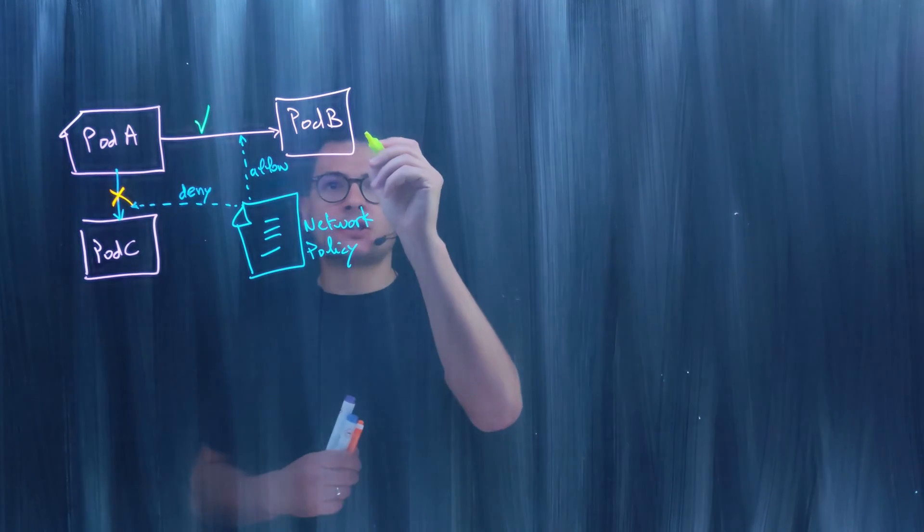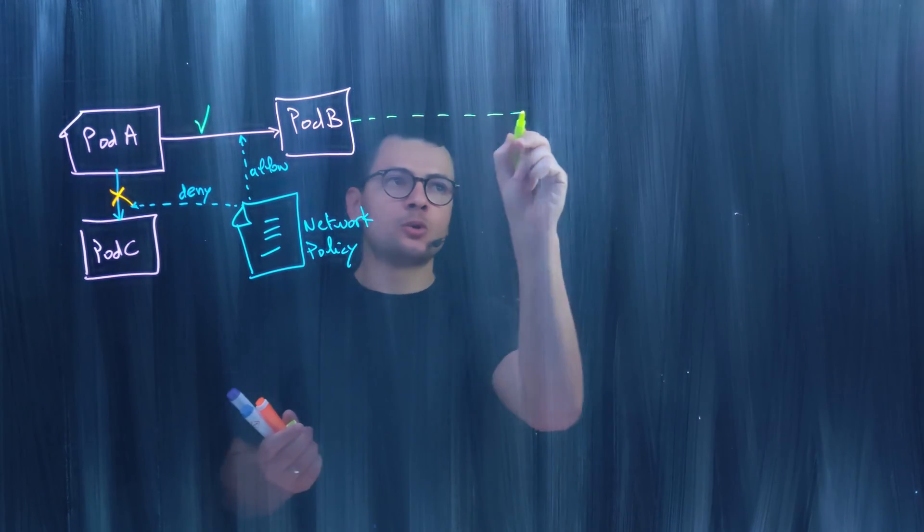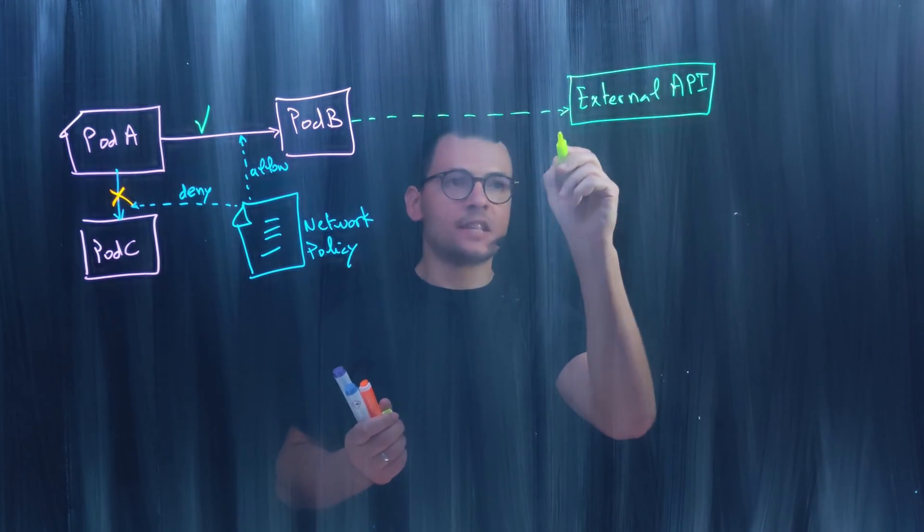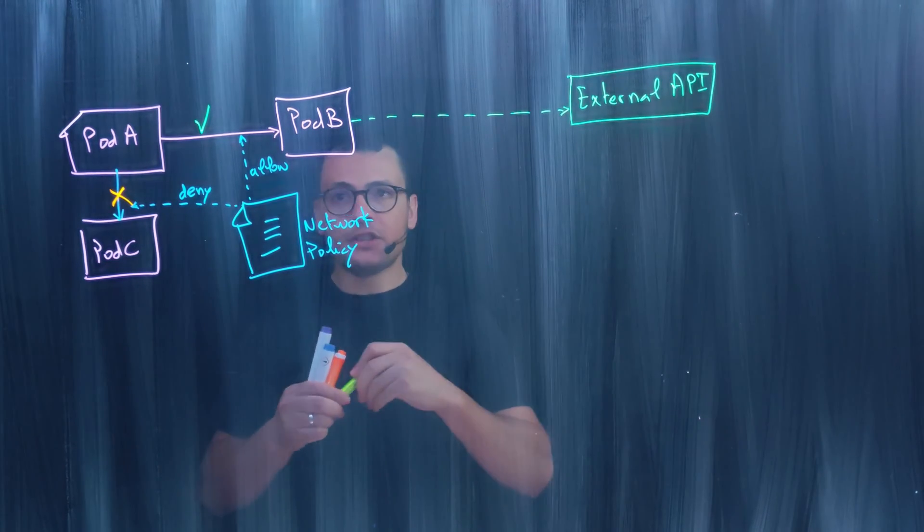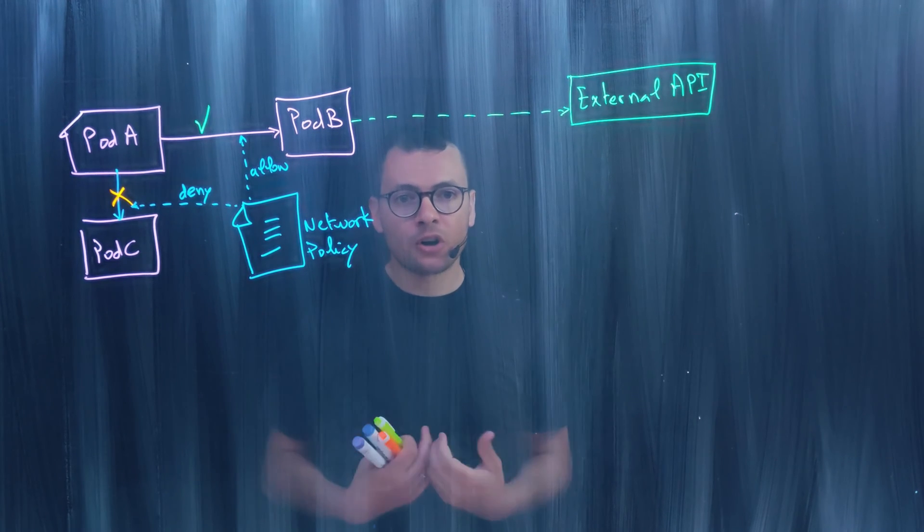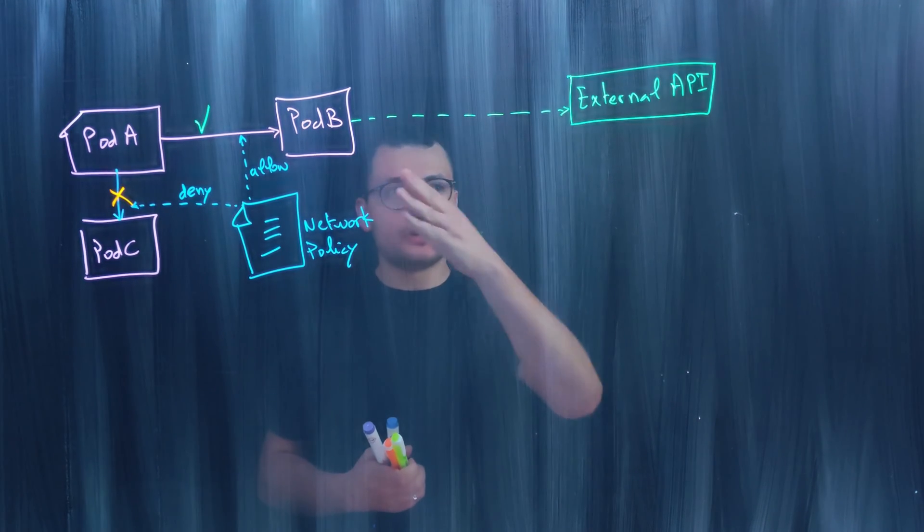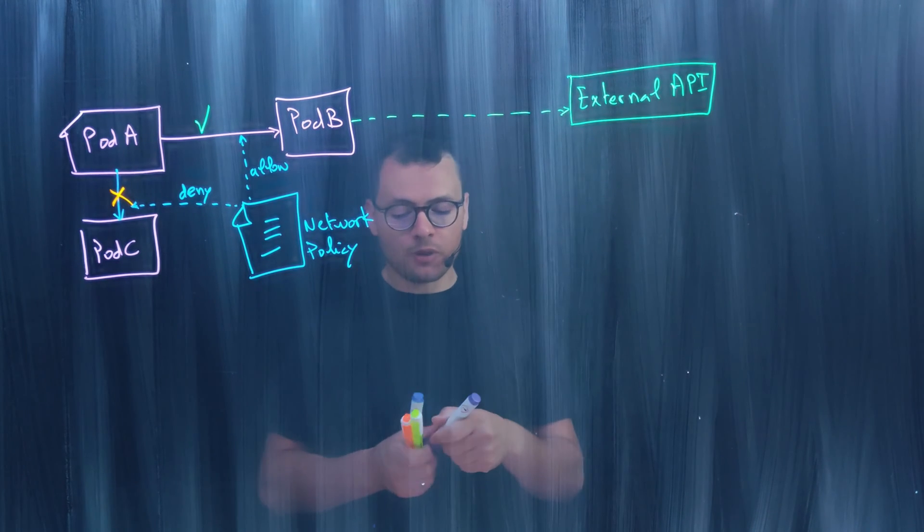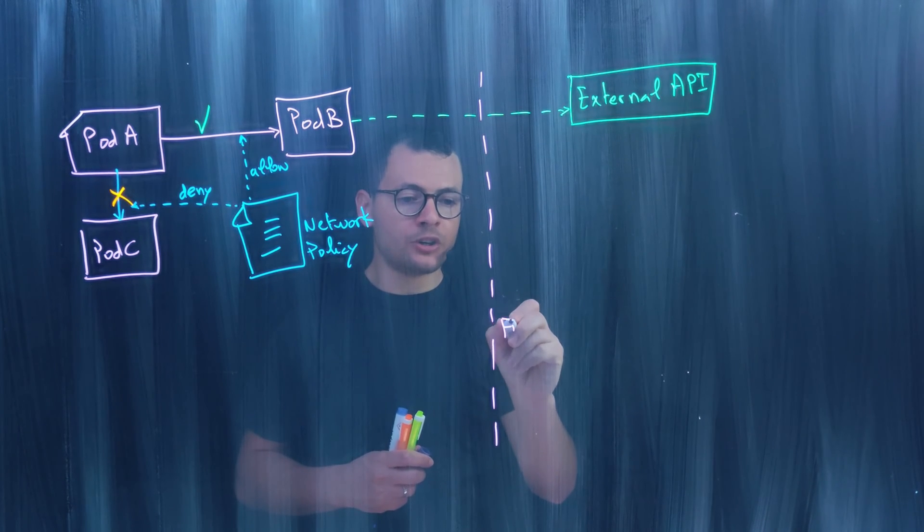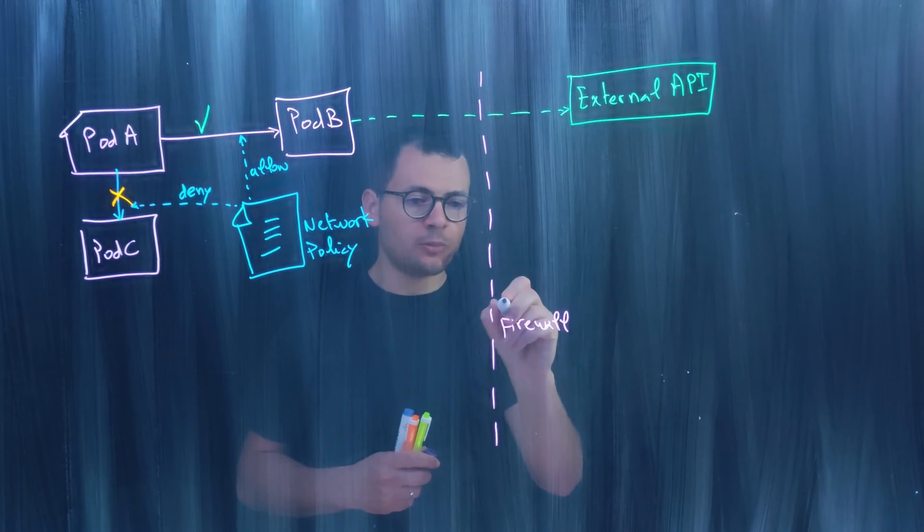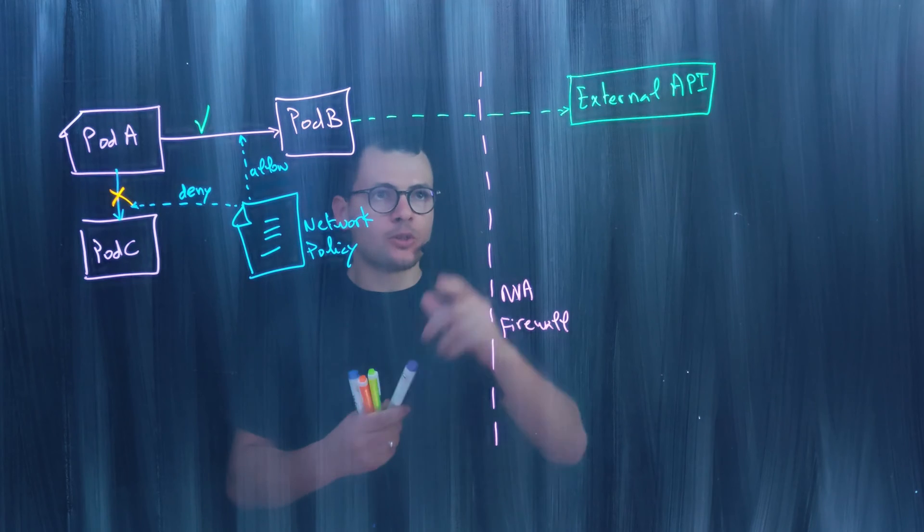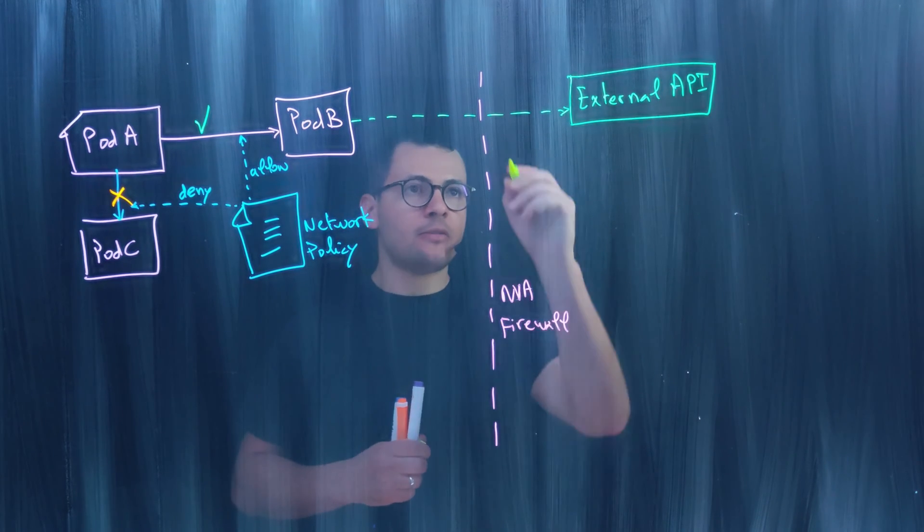Now we have another use case. Applications typically want to connect to external services. We might have an external API that's an external resource of my cluster. Pod B wants to connect to that external API. For organizations who want to apply zero trust network, they want to control and filter egress traffic going outside of the cluster. Here they would have a firewall to filter the traffic. That's a firewall, it could be an MVA, network virtual appliance, like an Azure Firewall. This egress traffic will be filtered at the firewall level.